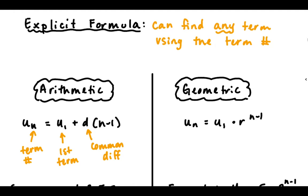So if you know the first term and the common difference, you can come up with an explicit formula. Or if you know the explicit formula, you can find the first term and common difference.